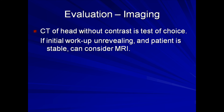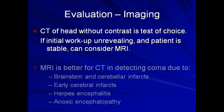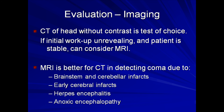If the head CT and aforementioned lab tests are non-revealing, an MRI scan can be considered depending upon the circumstances. Specific abnormalities that may be detected by MRI but missed by CT scan include brainstem or cerebellar infarcts, very early cerebral infarcts, herpes encephalitis, and anoxic encephalopathy.